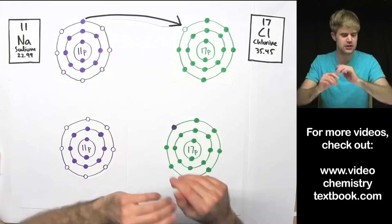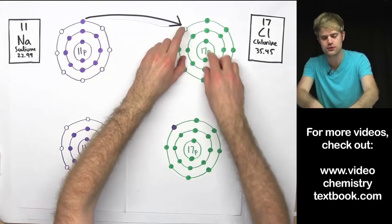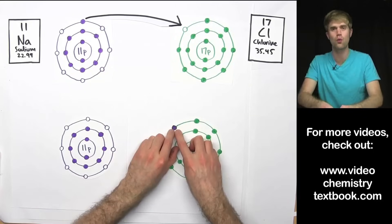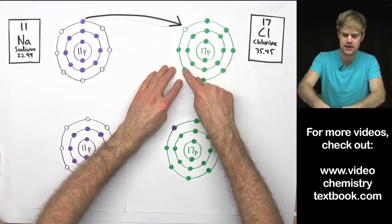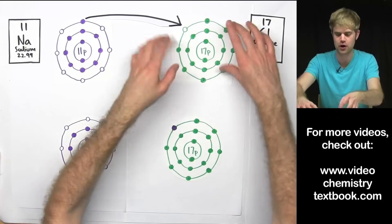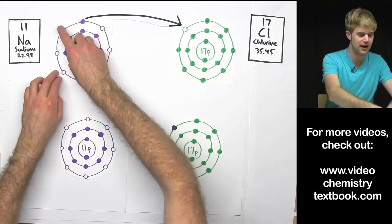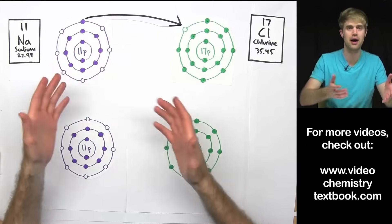So in the first step of ionic bonding, this one electron from sodium moves over here to chlorine to fill this one space. But people often ask, why couldn't these seven electrons from chlorine move over and fill these seven empty spots in sodium?